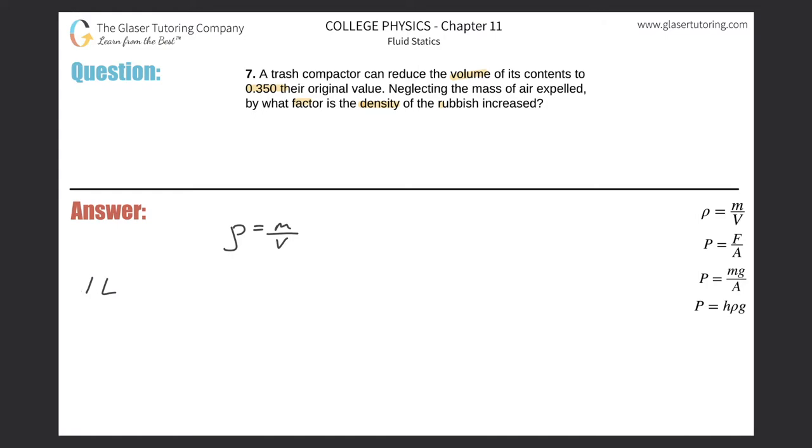Now, if this is the initial value, and the contents are reduced to, not by, but to 0.35 their original value. All I need to do is take this original value of one liter and then multiply it by that decimal, 0.35. And obviously the math here is easy. This is 0.35. And this is now the final.